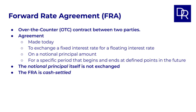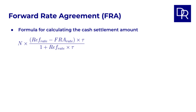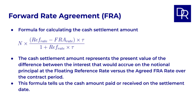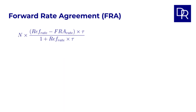To clarify some of these concepts, let's look at a formula for calculating the cash settlement amount. The cash settlement amount represents the present value of the difference between the interest rate that would accrue on the notional principle at the floating reference rate versus the agreed FRA rate over the contract period. This formula tells us the cash amount paid or received on the settlement date. To understand it fully, let's break down the key components that make up an FRA contract and appear in this formula.